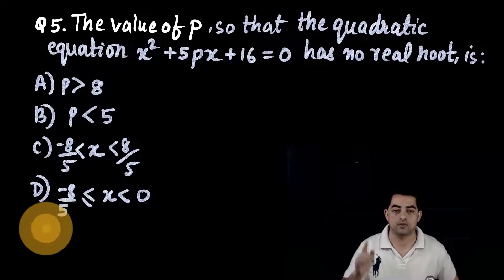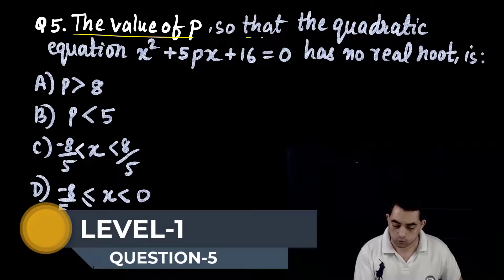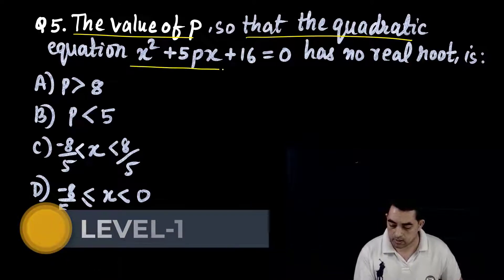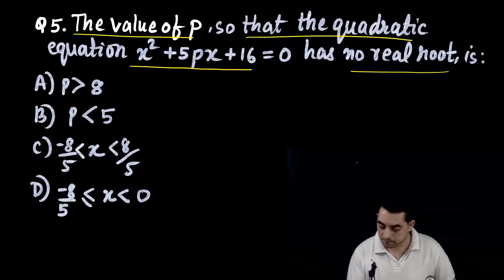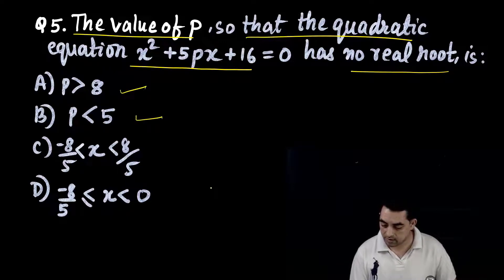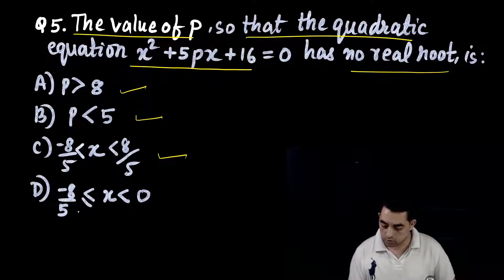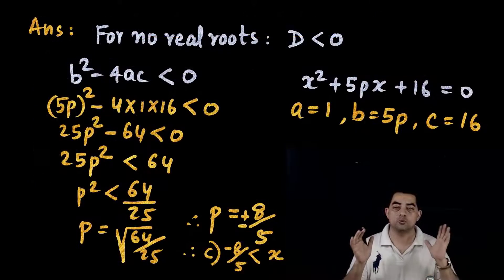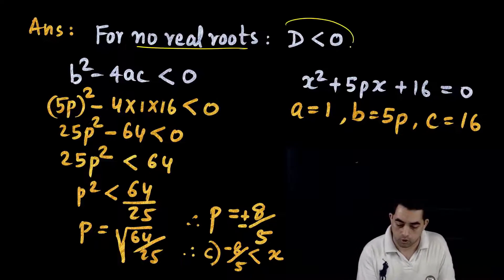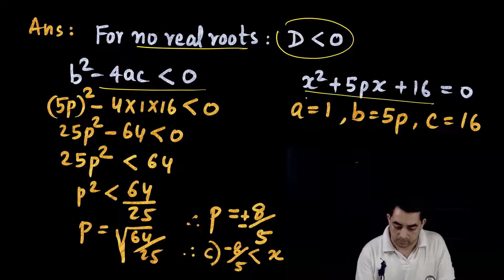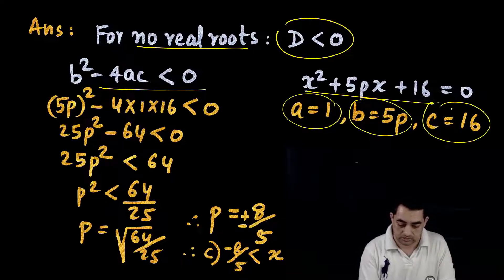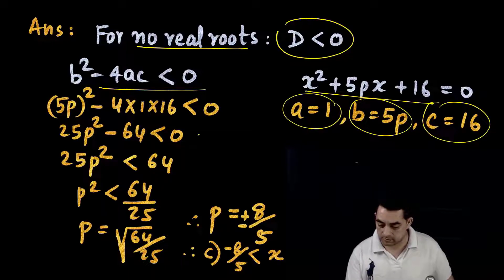Question number 5: the value of p so that the quadratic equation x² + 5px + 16 = 0 has no real roots. Options: p > 8/5, p < 5, -8/5 < p < 8/5, or p ≥ -8/5 and p < 0. For no real roots, the condition is D < 0, i.e., b² - 4ac < 0.